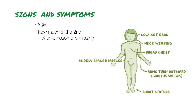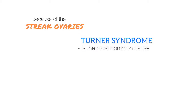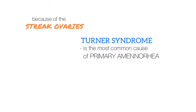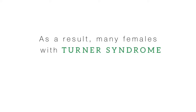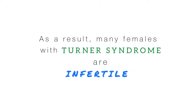Arms may turn outward, which is also called cubitus valgus. Because of the streaked ovaries, Turner's Syndrome is the most common cause of primary amenorrhea, which is when a female hasn't begun breast development by age 13 or hasn't had menarche by age 15. As a result, many females with Turner's Syndrome are infertile.